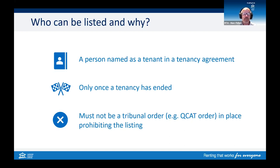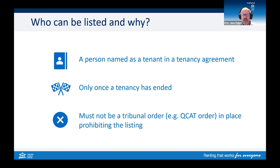Secondly, the agreement must have ended. There are prescribed reasons — there must be a prescribed reason for listing, which we'll look at on the next slide. A tribunal must not have made an order prohibiting the listing of information. All of these details are set out in Section 459 of the Residential Tenancies and Rooming Accommodation Act, and this information is available on our tenancy database fact sheet, which we encourage you to access on our website.